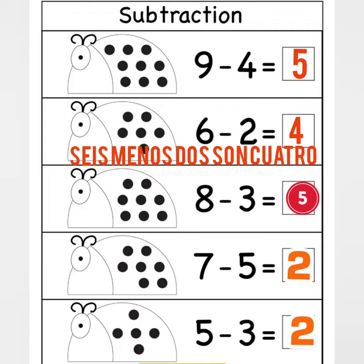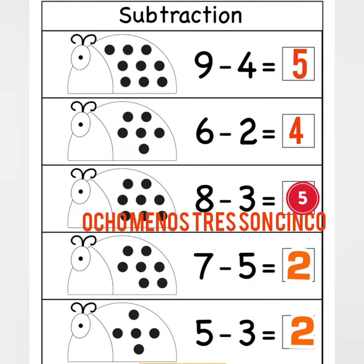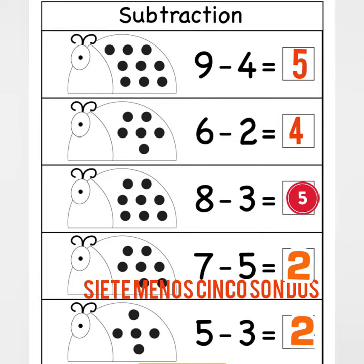For the next one we have eight minus three equals five. In Spanish you're going to say: ocho menos tres son cinco.